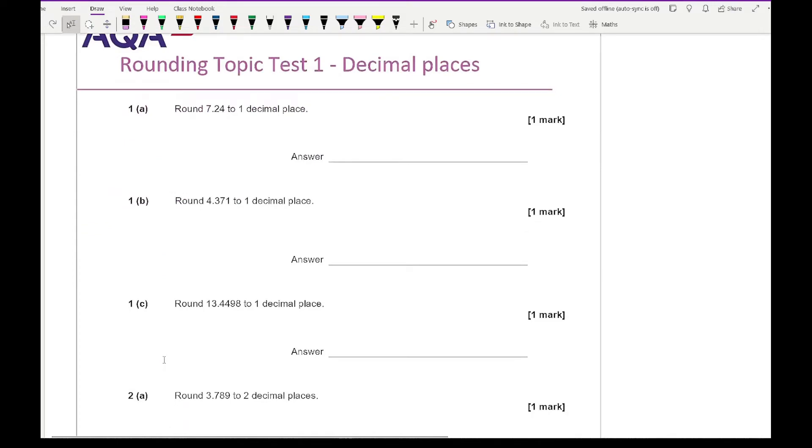Question 1A says round 7.24 to 1 decimal place. Reminding you that decimal places basically means how many numbers they want after the decimal point, regardless of whether it's 0 or whatever. The basic method is you underline however many numbers we want, which is 1, and we circle the number next to it, which I'm going to highlight. If that highlighted number is greater than 4, then we add 1 to the underlined number. This one isn't greater than 4, the highlighted number is 4, so it stays as 7.2.